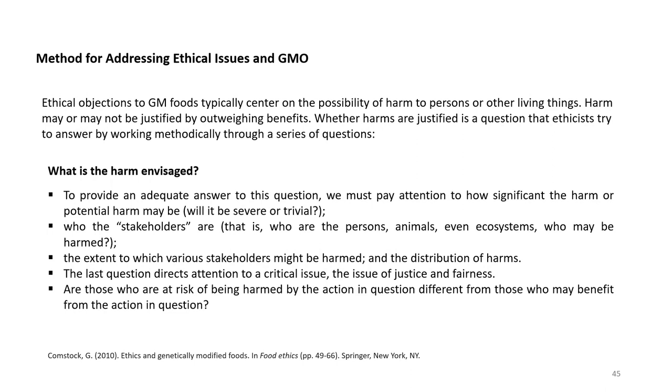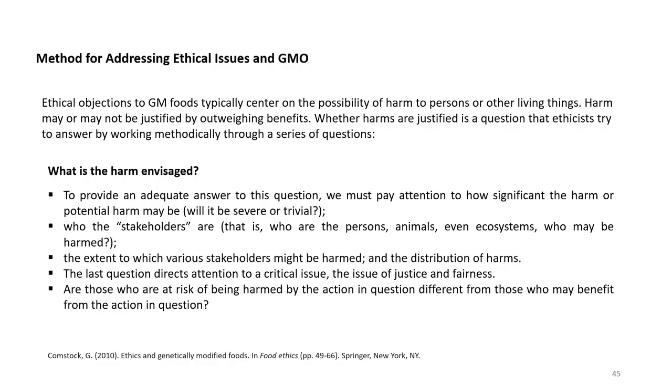Methods for addressing ethical issues in GMOs: ethical objections to genetically modified foods typically centre on the possibility of harm to persons or other living things. Harm may or may not be justified by outweighing the benefits. Ethicists try to answer this by working methodically through a series of questions: what is the harm envisaged, how significant is the harm or potential harm, who are the stakeholders — that is, persons, animals, even ecosystems — who may be harmed, the extent to which various stakeholders might be harmed, and the distribution of the harms. The last question directs attention to the critical issue of justice and fairness: are those at risk of harm different from those who may benefit?